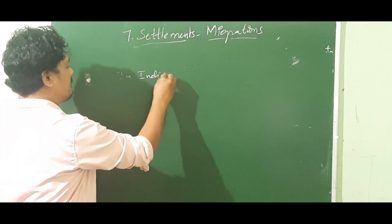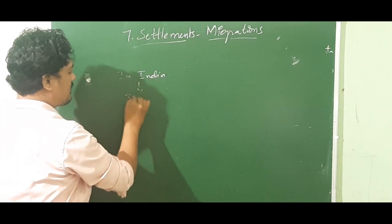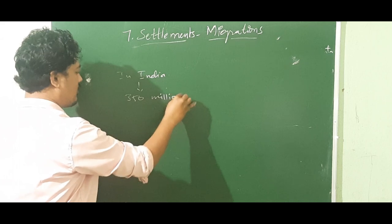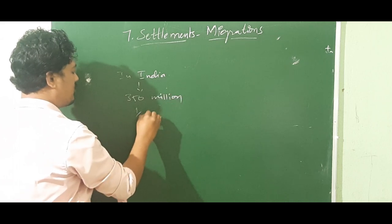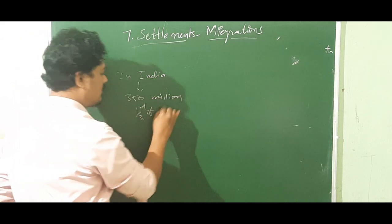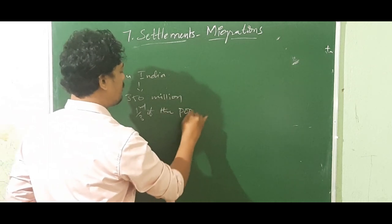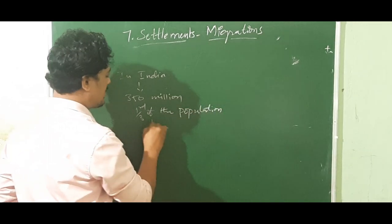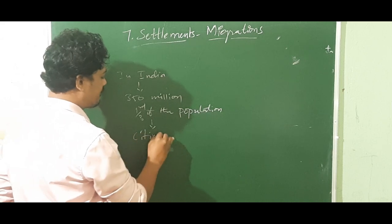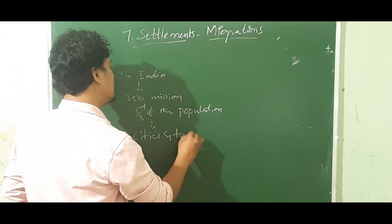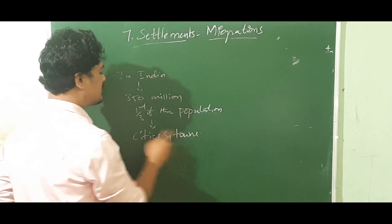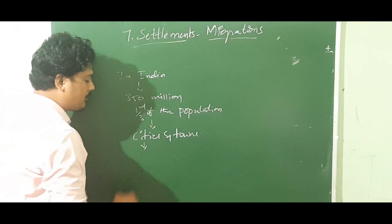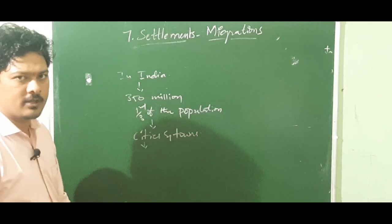In India, nearly 350 million people — that is about one third of the population — live in urban areas.